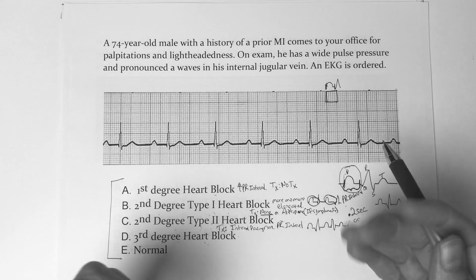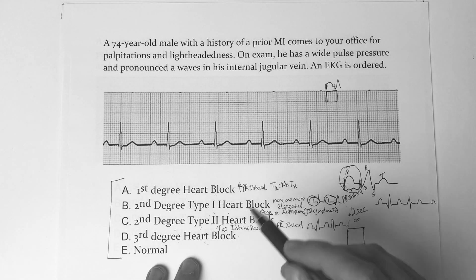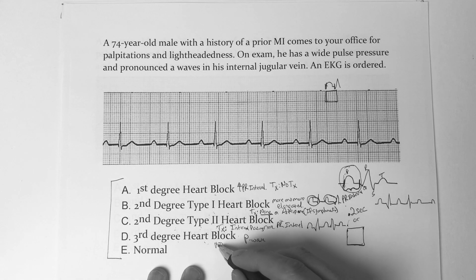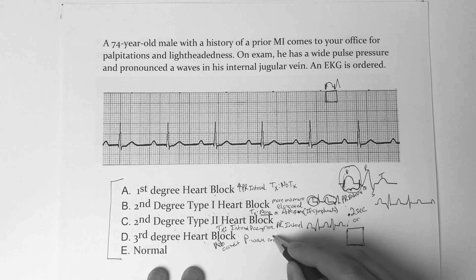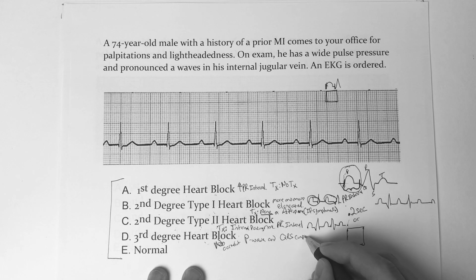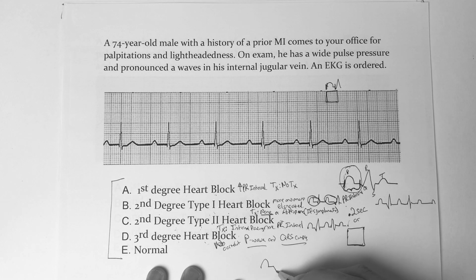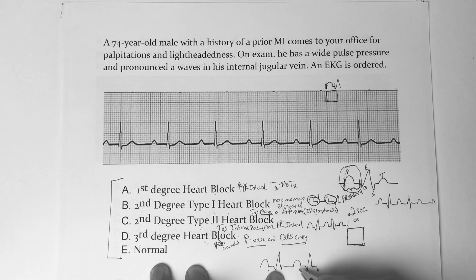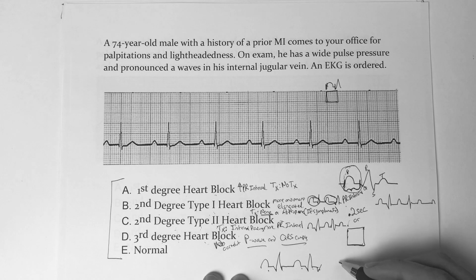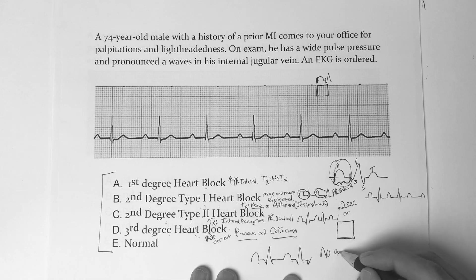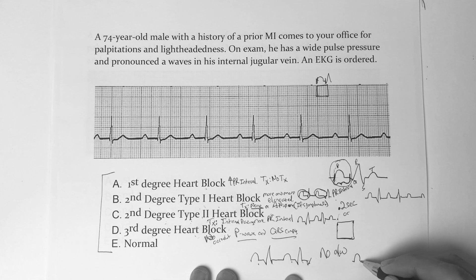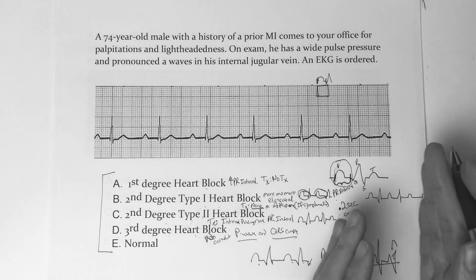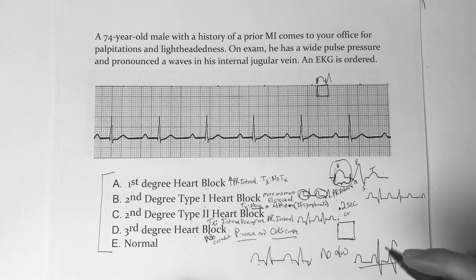A third-degree heart block is where there's no correlation between the P wave — which represents the atrium — and the QRS complex. Normally you should have a P wave followed by a QRS complex: atrium, then the ventricles. But in third degree, when you see an EKG there's no association at all. It could be a P wave, then another P wave, then a QRS somewhere — just no correlation. It's jumbled. That's a third-degree heart block.